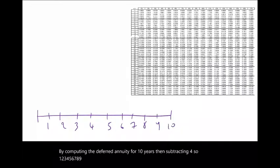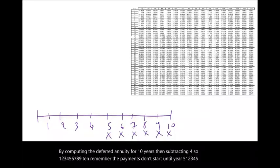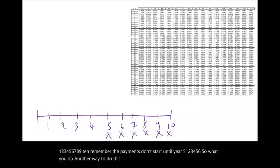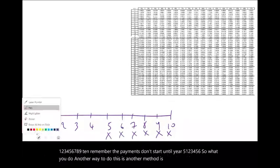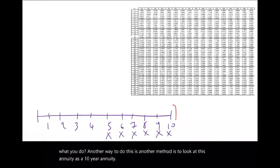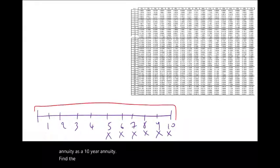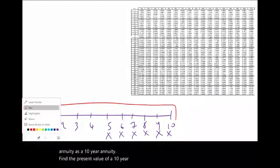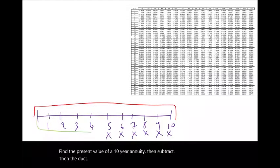Remember, the payments don't start until year 5. Another method is to look at this annuity as a 10-year annuity, find the present value of a 10-year annuity, and then deduct four years from it.